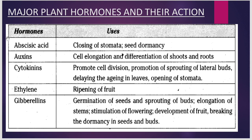Let us see what are the major plant hormones and their action. Plants secrete various hormones for various purposes. Abscisic acid is responsible for closing of stomata and seed dormancy. Auxins are responsible for cell elongation and differentiation of shoots and root cells. Cytokinins are responsible for promoting cell division, promoting sprouting of lateral buds, delaying aging in leaves, and opening of stomata. Ethylene is responsible for the ripening of fruit. Gibberellins are responsible for germination of seeds and sprouting of buds, elongation of stem, stimulation of flowering, development of fruit, and breaking dormancy in seeds and buds.